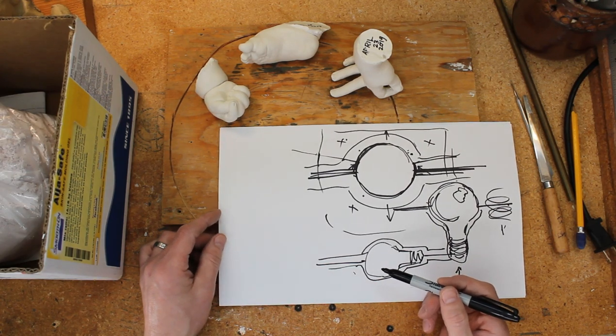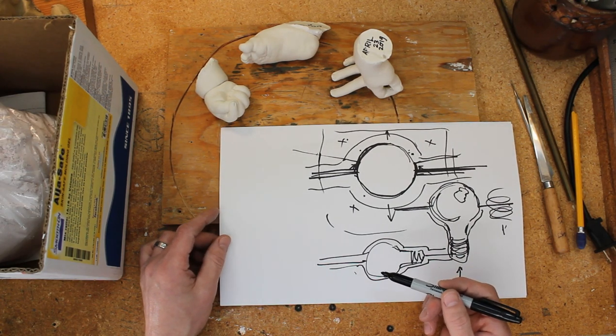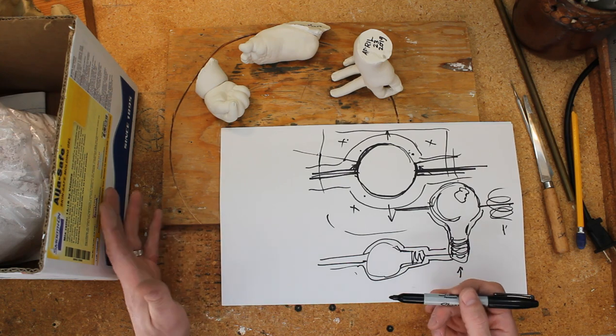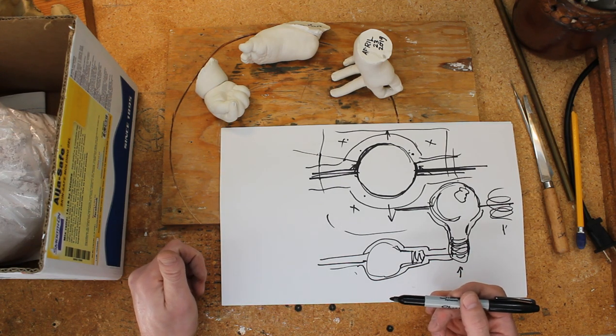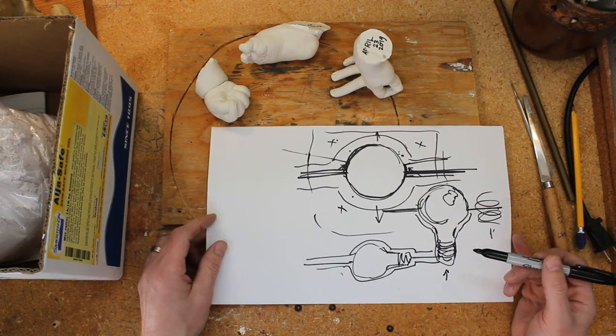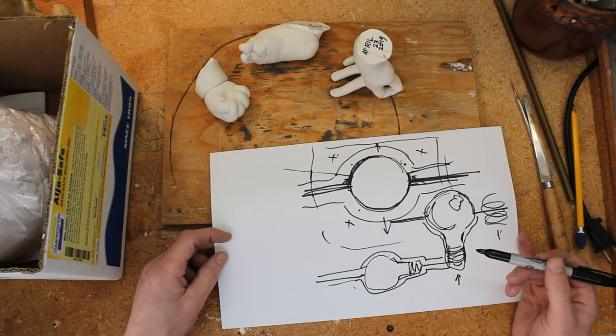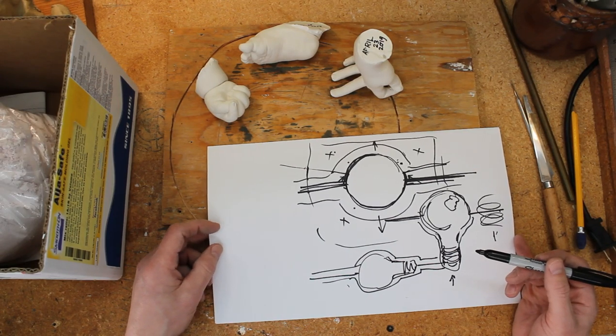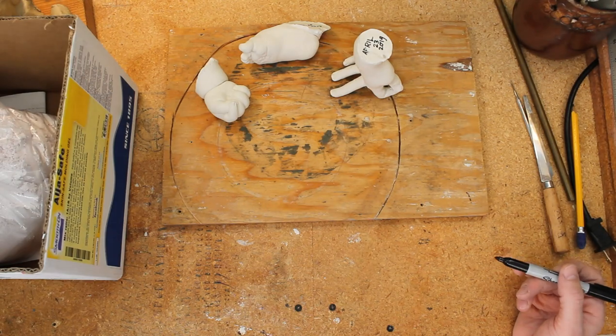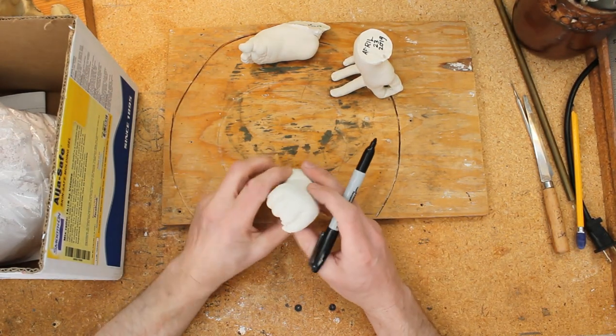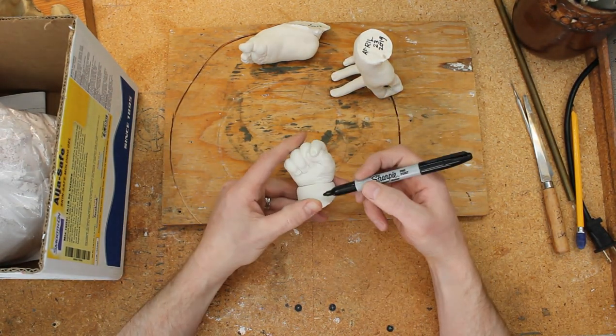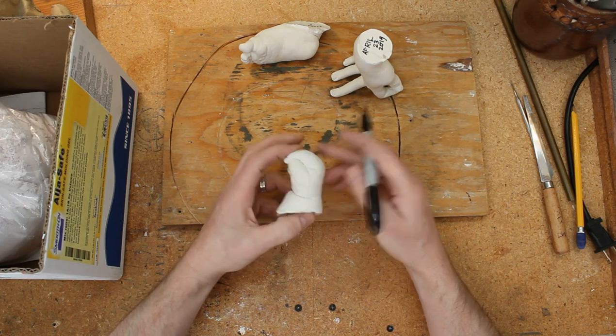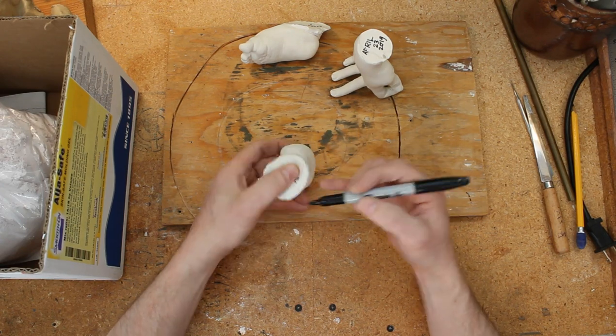Finding the path of least resistance is really the MO for making a simple two-part mold. Now with these hands, it's a little more difficult because they're so complex in nature. The best way to do it is going from the top of the wrist bone there, all the way over the knuckles, and then underneath on the bottom side.